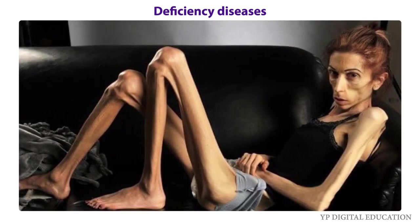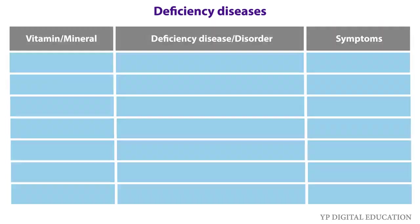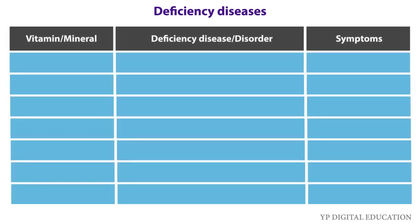If the diet is deficient in both carbohydrates and proteins for a long period of time, the growth may stop completely. Such a person becomes very lean and thin, and so weak that he or she may not even be able to move. Deficiency of different vitamins and minerals may also result in certain diseases or disorders in our body.